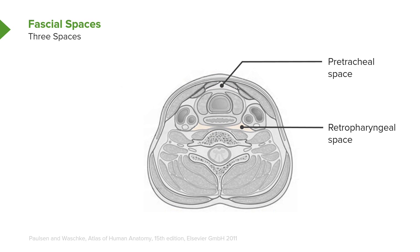A second space is shown right in through here. This is referred to as the retropharyngeal space, and it lies between the visceral compartment and its sheath and the vertebral compartment and its deep fascial layer.